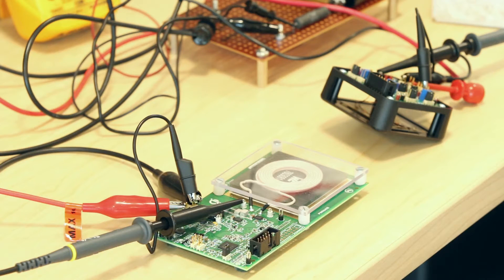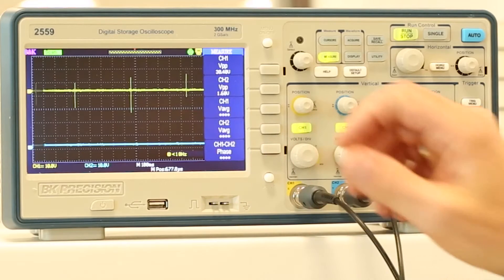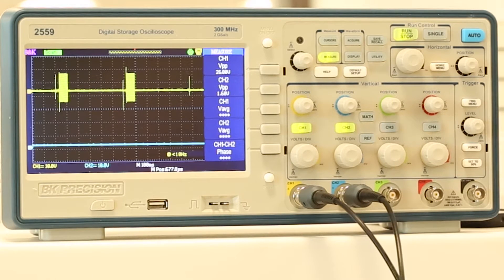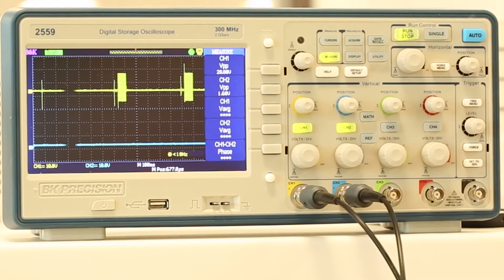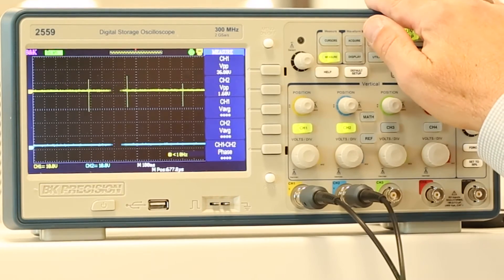Here we have the BQ500215 transmitter board with no receiver connected. It's hooked up to a 12 volt power supply. What we see here on channel 1 of the scope is the output of the transmitter coil. Channel 1 is monitoring TP3 on the eval board. During what's known as a selection phase, it sends out an analog ping or pulse every 400 milliseconds or so. Here the scope is set to 10 volts and 100 milliseconds per division.